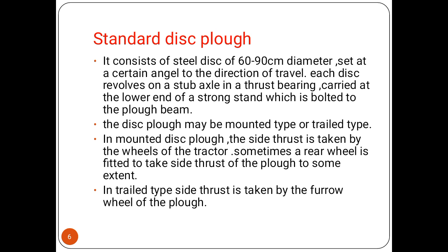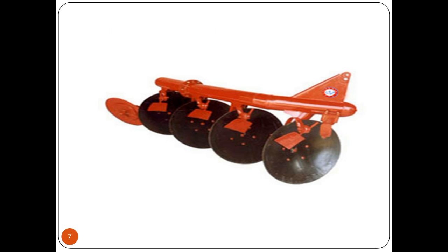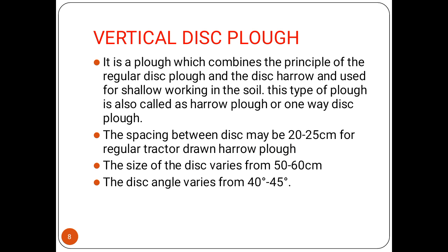The vertical disk plow combines the principle of the regular disk plow and the disk harrow, and is used for shallow working. This type of plow is also called the haar plow or one-way disk plow. The spacing between the disks may vary from 20 to 25 centimeters for regular tractor-drawn plow, the disk size is 50 to 60 centimeters, and the disk angle varies from 40 to 45 degrees.